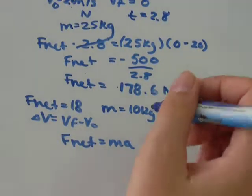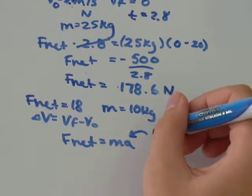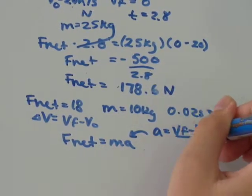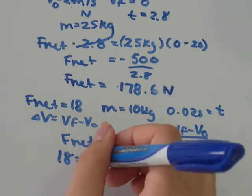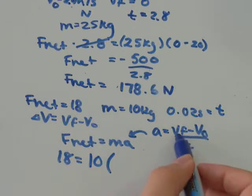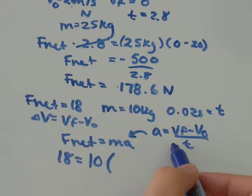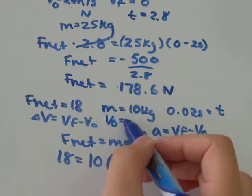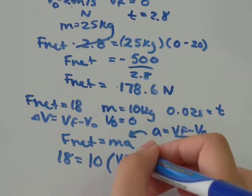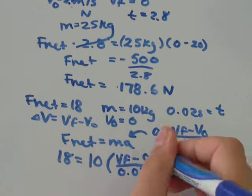We're going to think that a, if you remember back to kinematics, we have a formula that says a is v_f minus v_original over t. So the net force was 18. That's going to equal mass is 10 times v_f. I need to tell you guys that the object started at rest, so v_original would be 0. So v_f minus 0 over the time of 0.02 seconds.